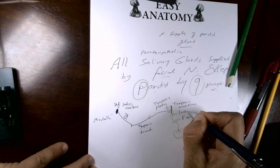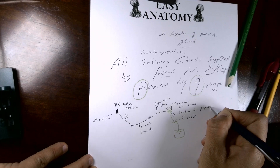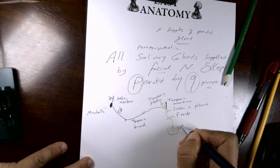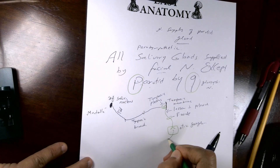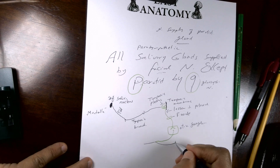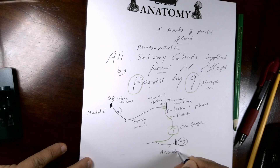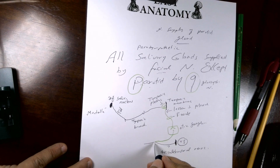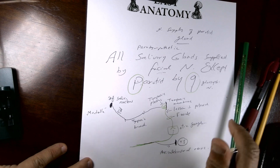From the tympanic plexus, the glossopharyngeal nerve fibers emerge through the anterior surface of the petrous bone as the lesser superficial petrosal nerve, pass through foramen ovale, and synapse in the otic ganglion. The postganglionic fibers then join the auriculotemporal nerve — a branch from the posterior division of the mandibular nerve (V3).